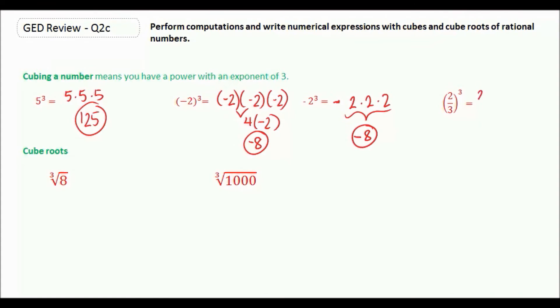And then 2 thirds cubed would be 2 thirds times 2 thirds times 2 thirds. 2 times 2 times 2 gives us 8. 3 times 3 times 3 gives us 27. So it's 8 27ths.